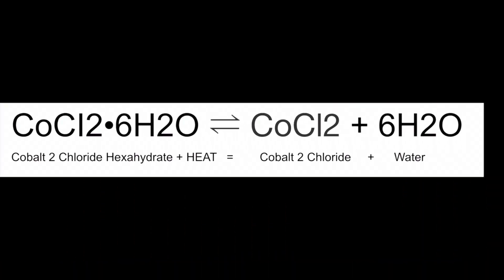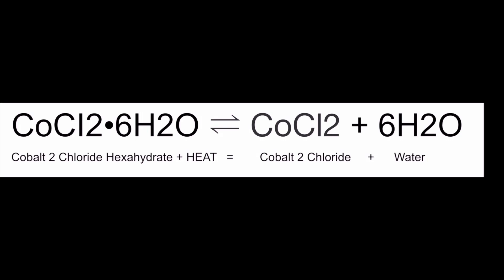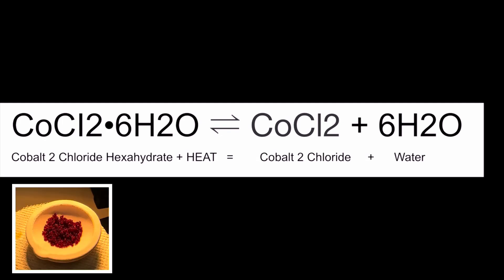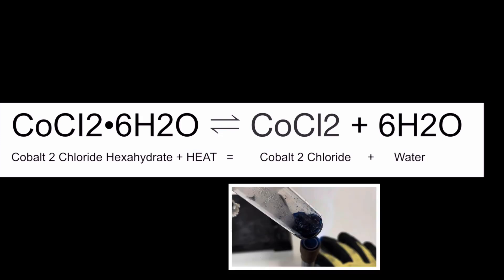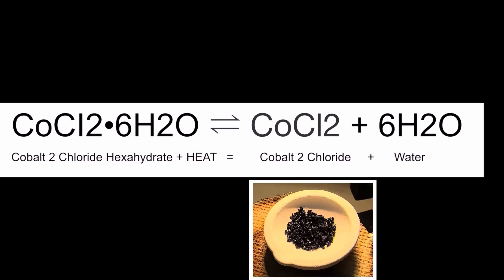Here's the balanced equation for this amazing reversible reaction that illustrates Le Chatelier's equilibrium principle. We start with cobalt-2-chloride hexahydrate — that's COCl2·6H2O — and when we add heat, we get the product cobalt-2-chloride (COCl2) and 6 moles of water (6H2O). What's so amazing is that when we add water, it shifts back to the hexahydrate, the hydrated pink form. And when we heat it up, it loses those water molecules, becomes anhydrous cobalt-2-chloride, and shifts back to blue.